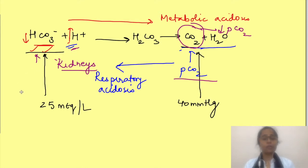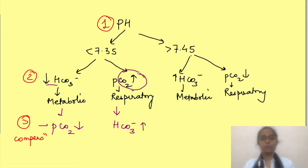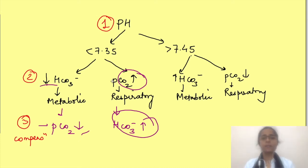So bicarbonate concentration rises. Basically, the change in the compensated variable is in the same direction as the cause of change. If pCO2 is rising, as a compensation bicarbonate also rises, and vice versa. The same principle applies in alkalosis.